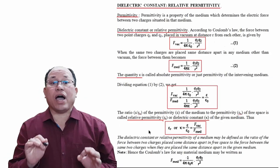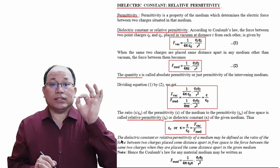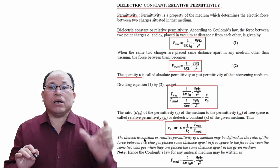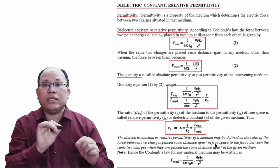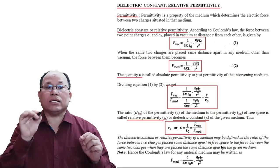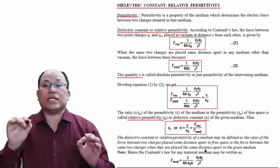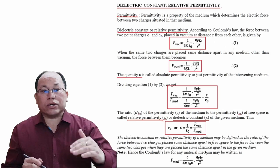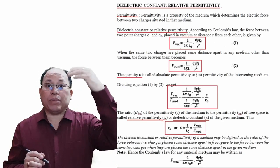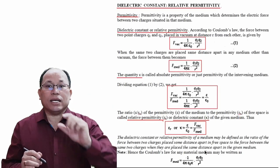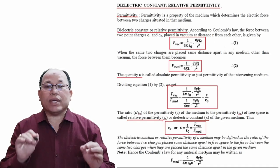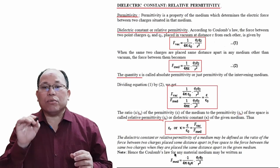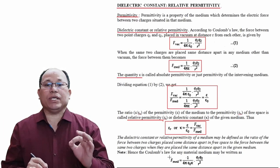After getting this formula we can define dielectric constant. The dielectric constant or relative permittivity of a medium may be defined as the ratio of the force between two charges placed some distance apart in free space to the force between the same two charges placed the same distance apart in the given medium.